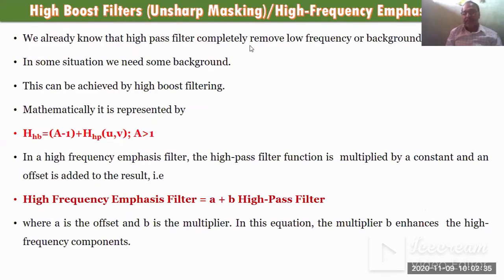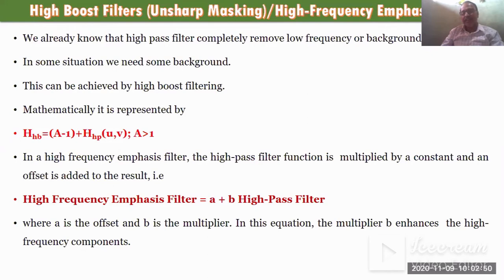In a previous lecture we discussed two important filters: low pass filter and high pass filter. In low pass filter there are three types, as well as in high pass filter there are three types — ideal low pass, ideal high pass, Butterworth low pass, Butterworth high pass, Gaussian low pass and high pass. These are the different types of filters discussed in the previous lecture.